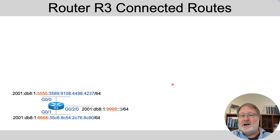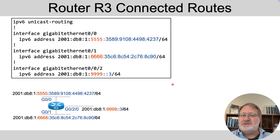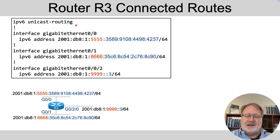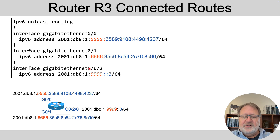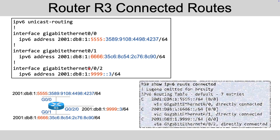Let's take a look at router R3. Here's its configuration as a reminder — IPv6 unicast routing enabled, global unicast addresses configured, and we'll assume the interfaces are up. Show IPv6 route connected shows three connected routes, one for each interface. You can pause and look over at the prefixes, which should match up to the top interface, the bottom interface, and the WAN interface.